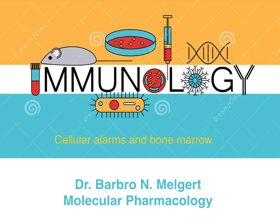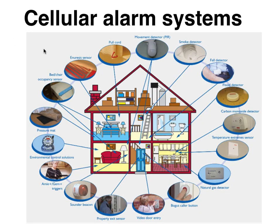In a previous class we talked about the local tissue resident immune cells that help out the innate immune responses when something is trying to enter our bodies. This class will be about the alarm system used and the help from the bone marrow that they can get when they are being overwhelmed. We talked about signals that induce phagocytosis by tissue-resident immune cells, and these receptors can also be used as cellular alarm systems.